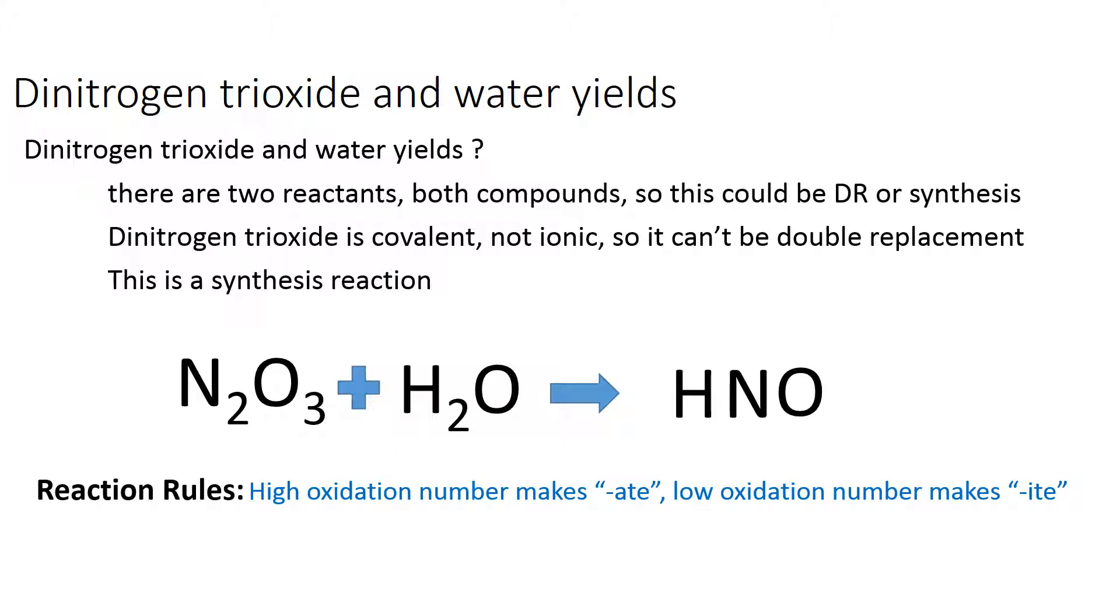We go back to our reaction rules, and we find that if the nitrogen in the reactant has a high oxidation number, this will make a polyatomic ion ending in -ate, so nitrate. And if it's a low oxidation number, it'll make nitrite.